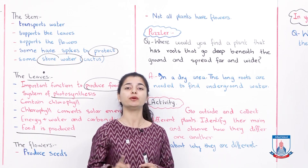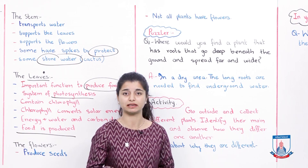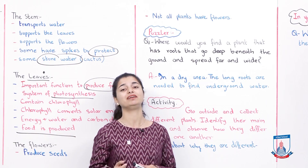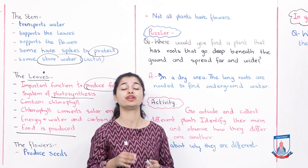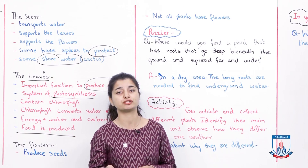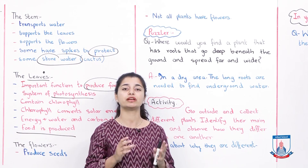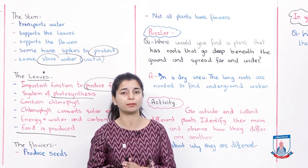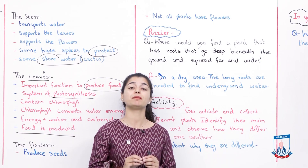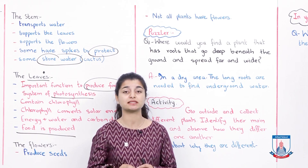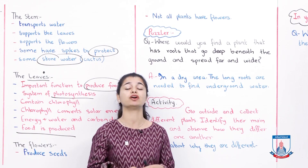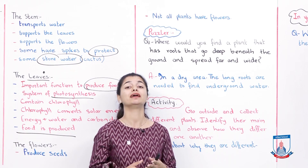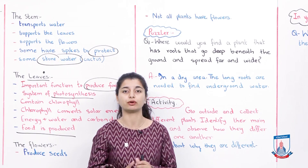So we have discussed the 4 important parts of plants. What have we done? We have discussed the 4 important parts of plants — roots, stem, leaves, and flowers — and the different roles they play in plant growth and survival. This covers unit 3.1 sub-topic.